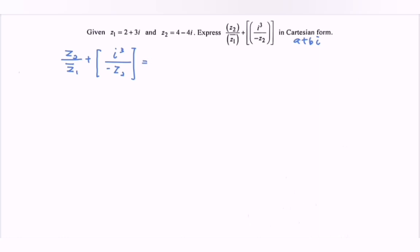First, substitute z₁ and z₂ carefully. So we have z₂ which is 4 - 4i over the conjugate of z₁. So here we have 2 - 3i plus i³.